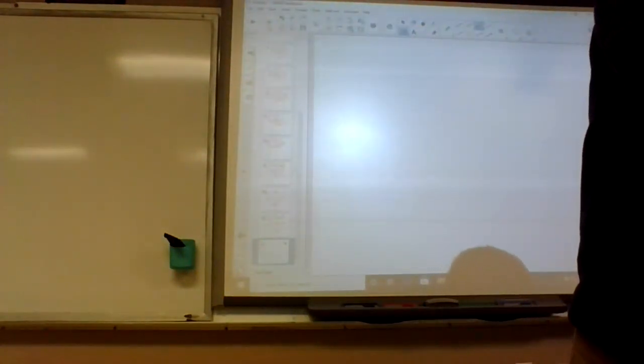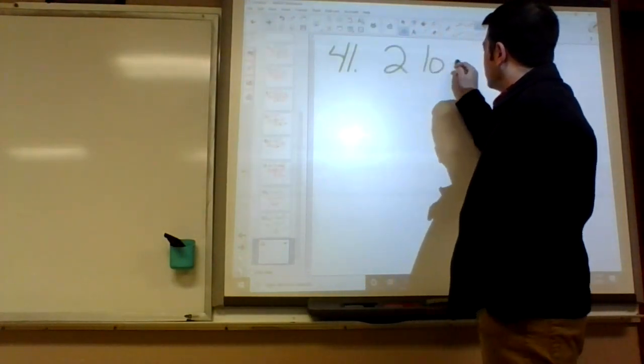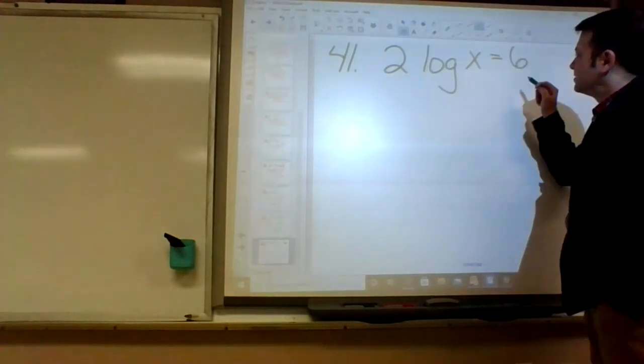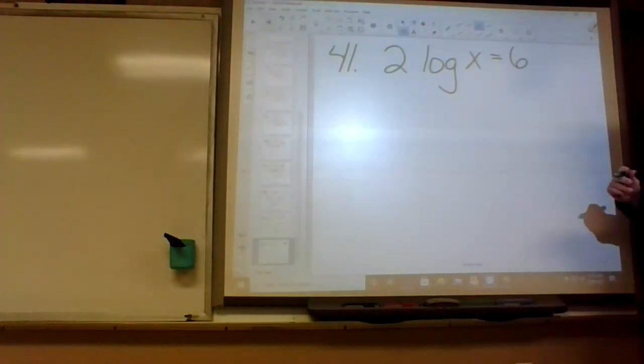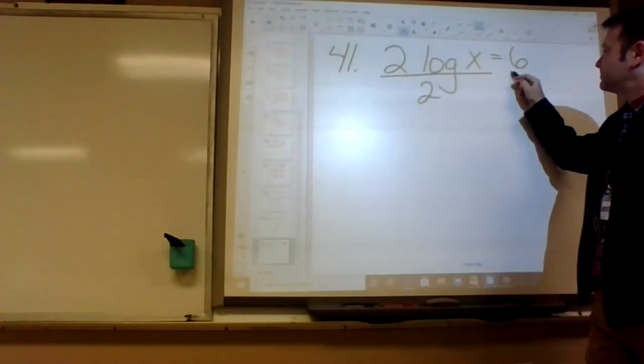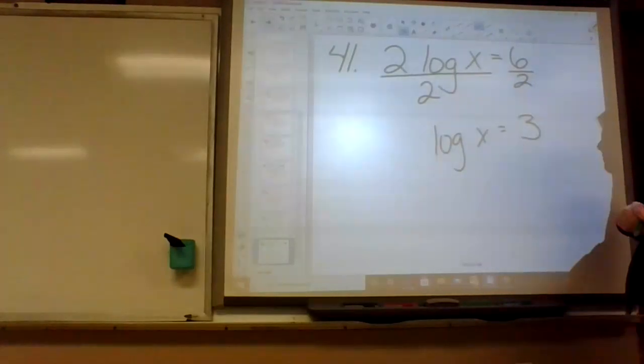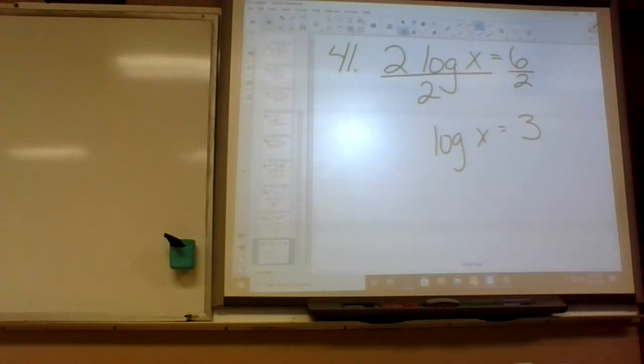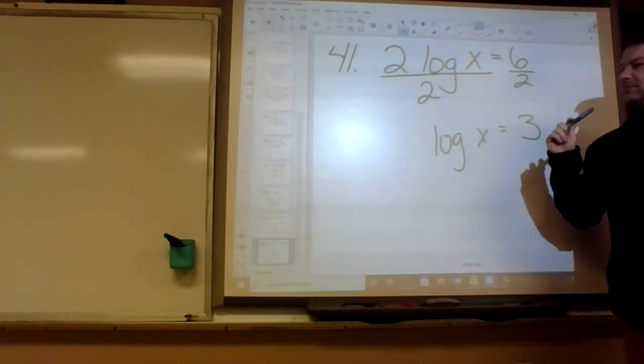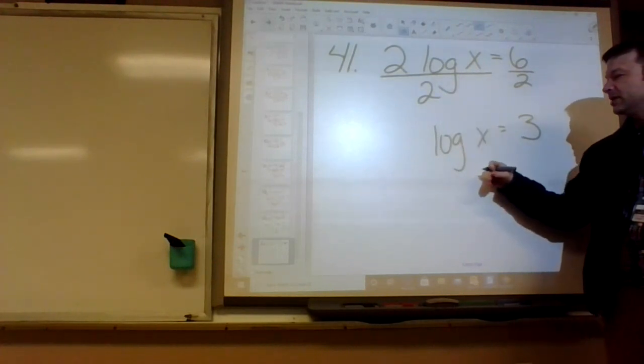Alright, number forty-one: 2log x equals 6. This one looks much easier. What do you guys think? Divide by two will be easier. It's because there's no log over here. So when we divide by two, we'll get a three. So log of x equals three. Now what? Divide by one? No. This is not log times x. This is log of x.